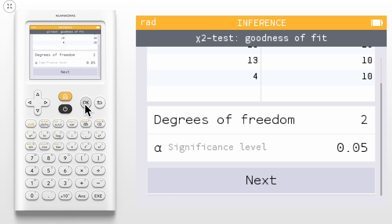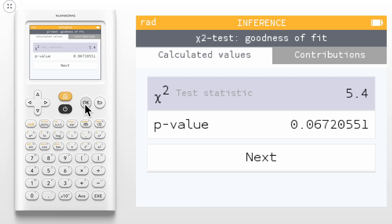Select Next. Now we can see our calculated values for this test, which include the chi-squared test statistics and the p-value.